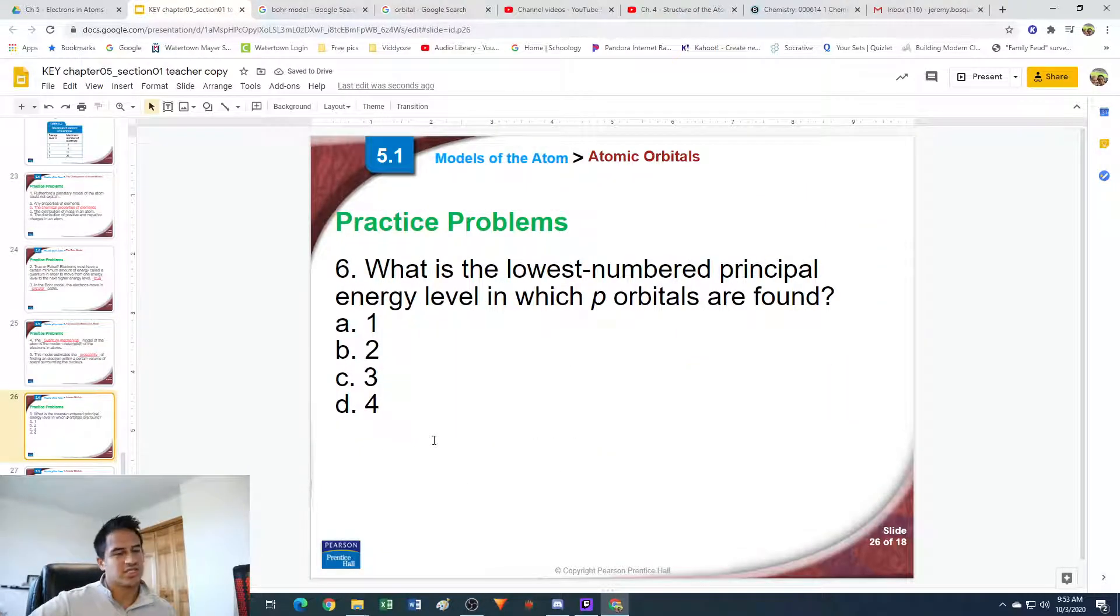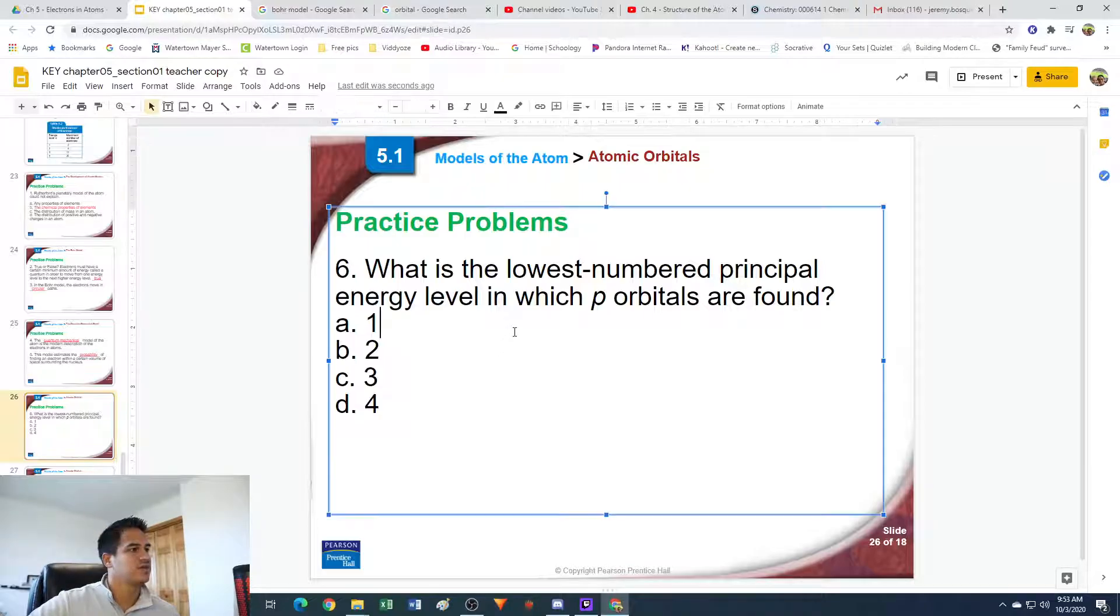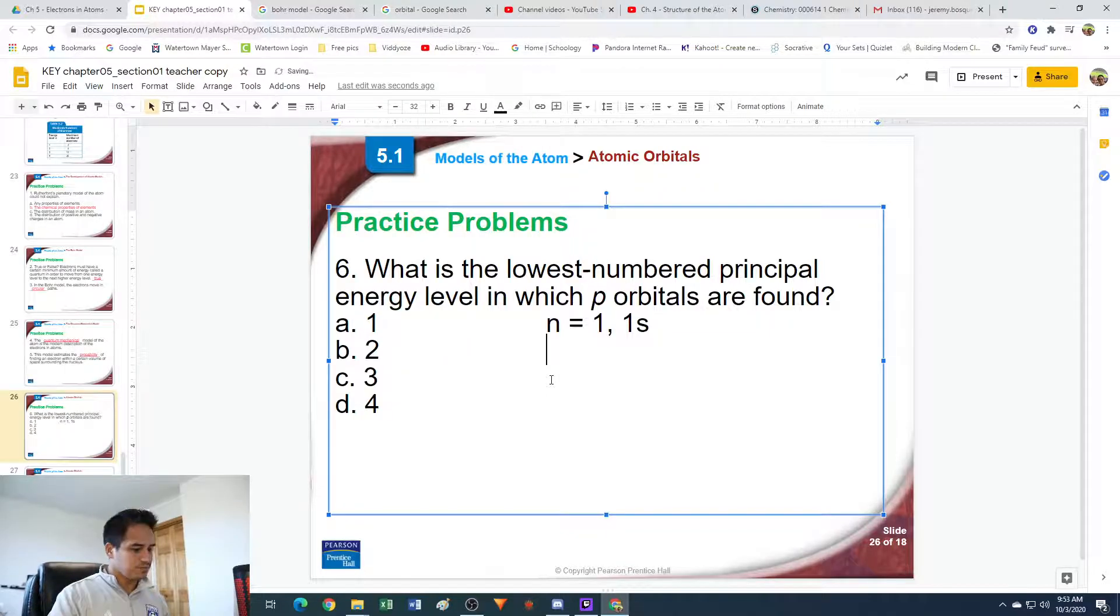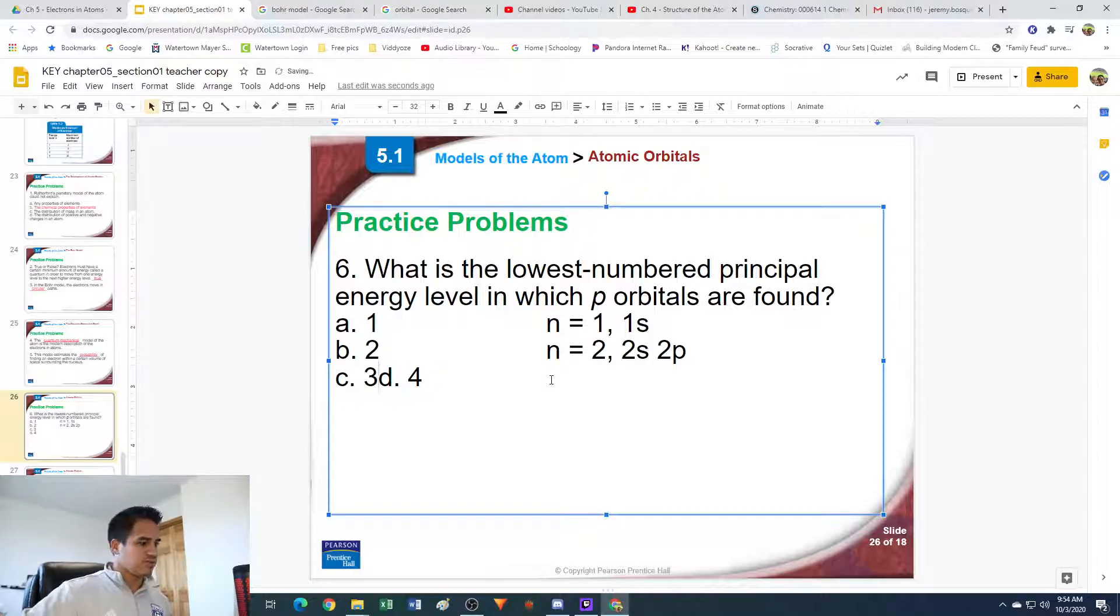Number six. What is the lowest numbered principal energy level in which p orbitals are found? Remember that the number of sublevels is depicted by what energy level you're at. I'm going to do some typing to help. Energy level one, n equals one - n is the letter we use to denote energy level. In n equals one, there's one sublevel, an s orbital. In energy level two, there are two sublevels: 2s and 2p. In energy level three, we have three sublevels.